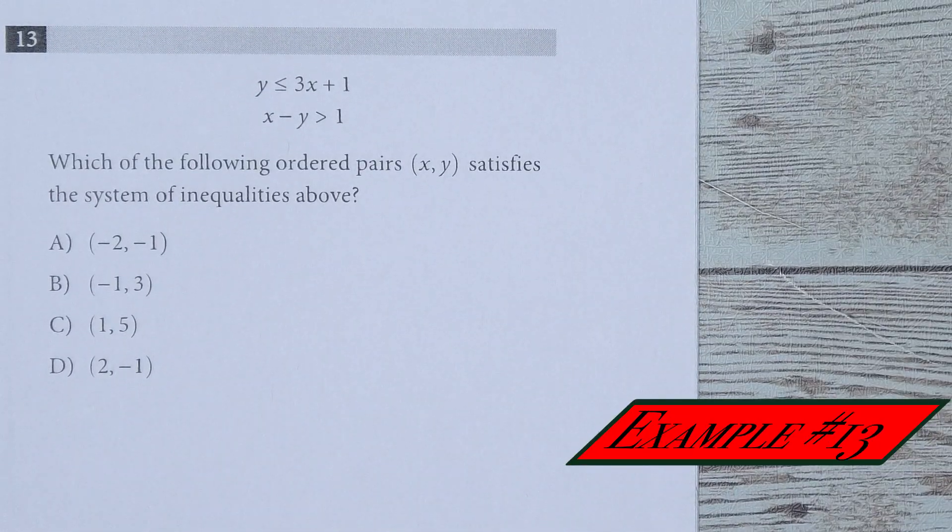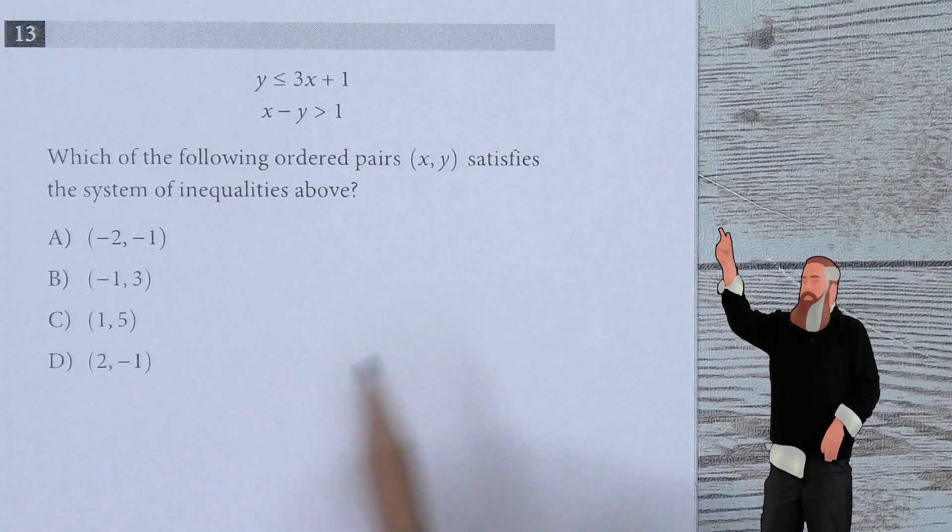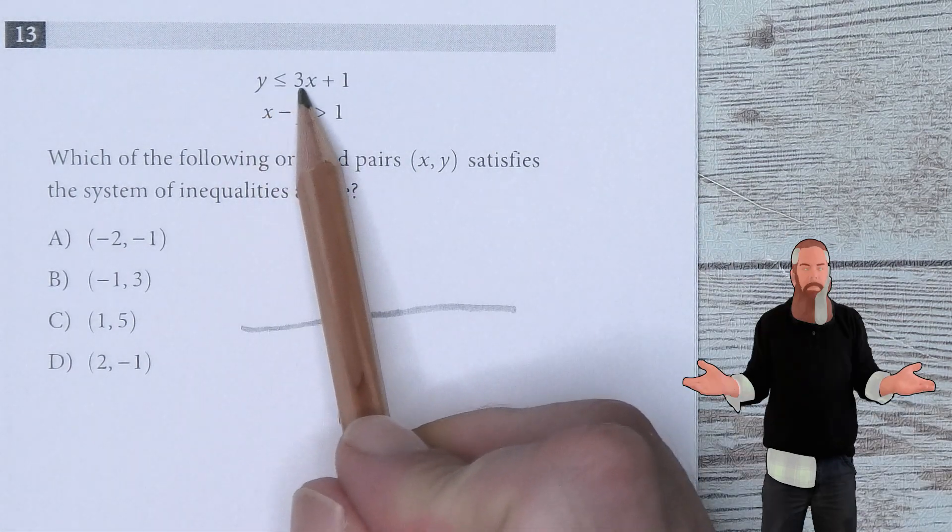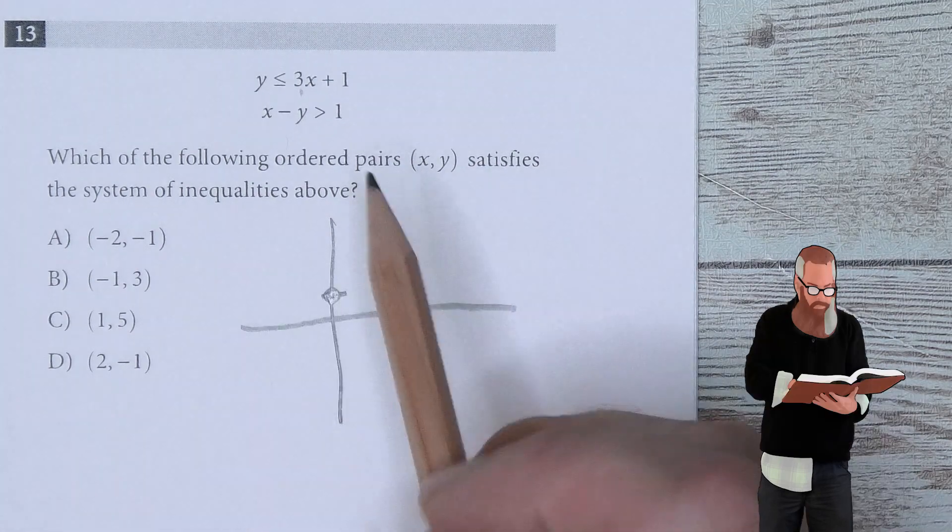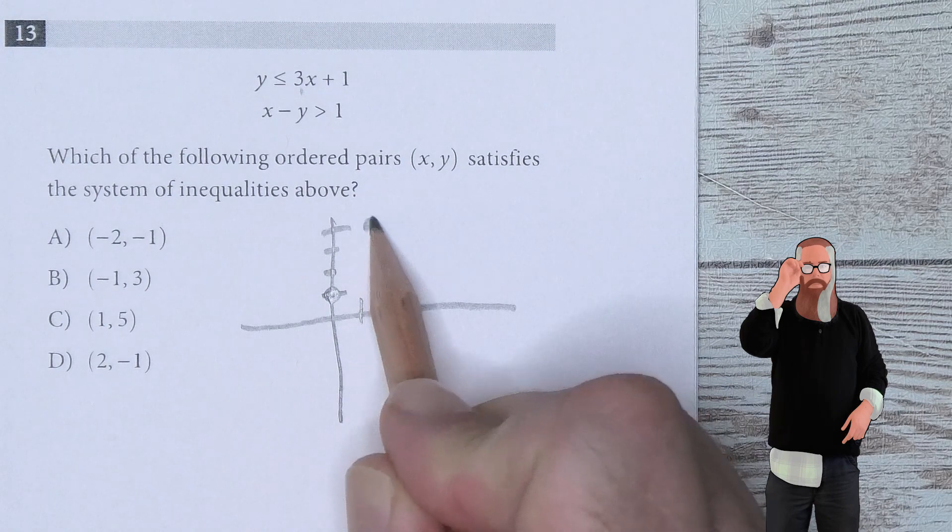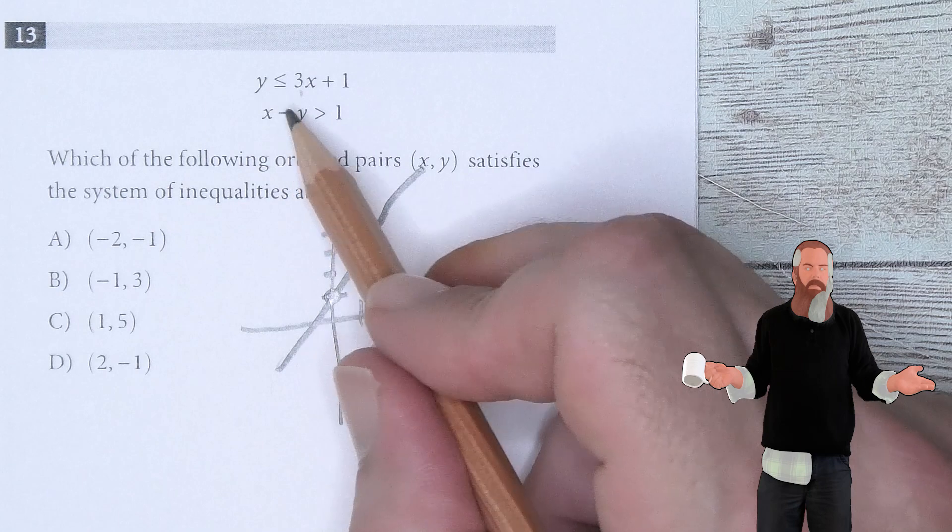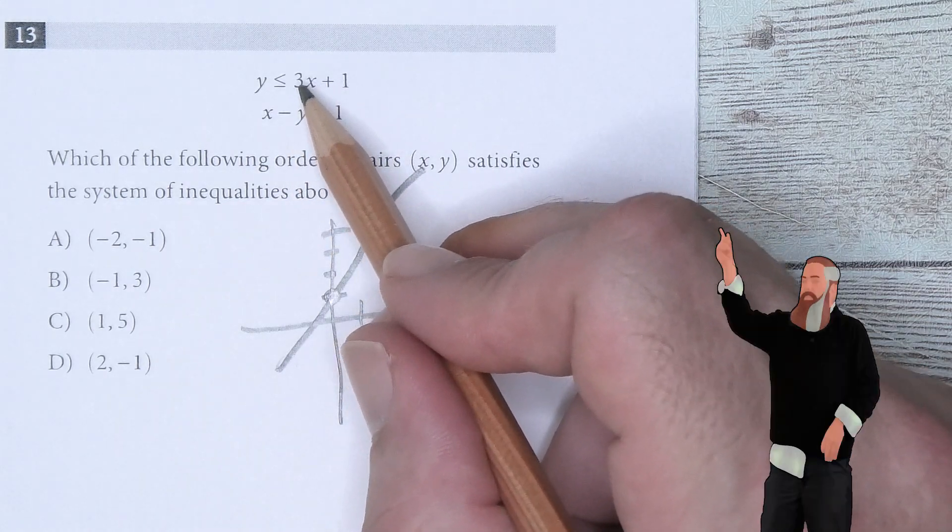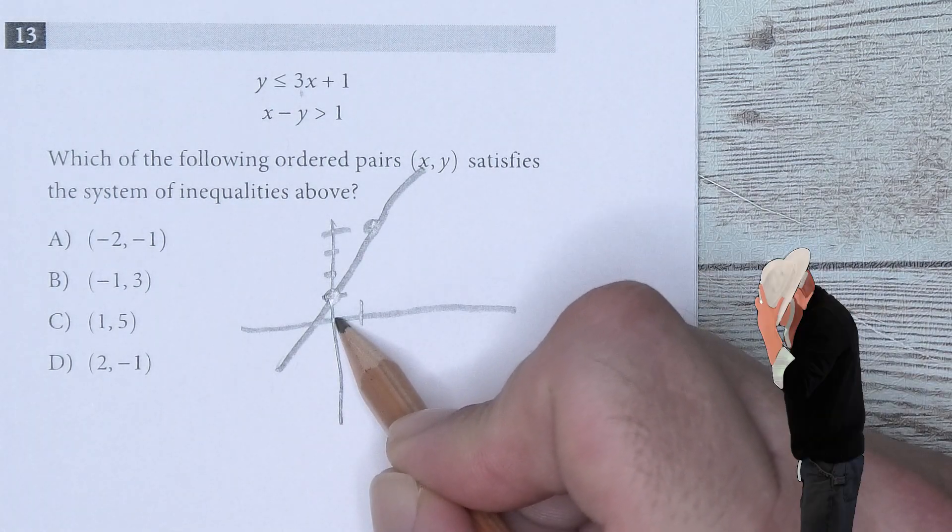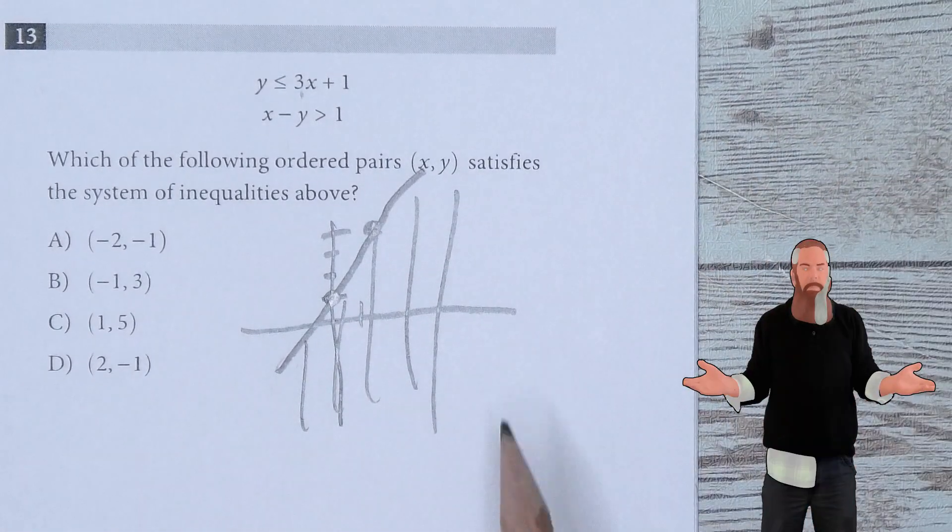Which ordered pair (X,Y) satisfies the system of inequalities above? Let's graph both equations. If X was 0, then Y would be at 1. It has a slope of 3, which means I go up 3 to the right 1 and get a second point. This gives my first equation. Everything must be less than or equal to this. I can ask: is 0,0 an answer? Is 0 less than or equal to 1? Yes, so I shade beneath it. To graph this second one, if X is 0, then Y is less than -1. So I have -1, and I'm shading down.